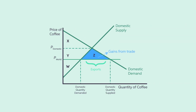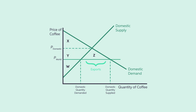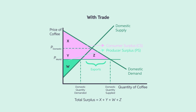What if the domestic price is higher? Then the country will import coffee. Without trade, the consumer surplus equals X, the producer surplus equals Y plus W, and total surplus equals X plus Y plus W. Once trade is allowed, the domestic price falls to equal the world price.